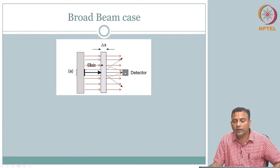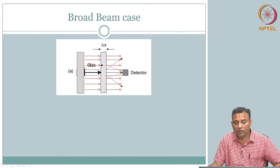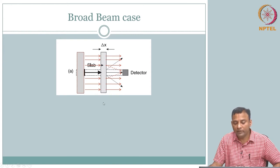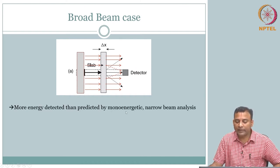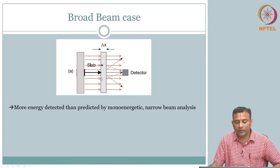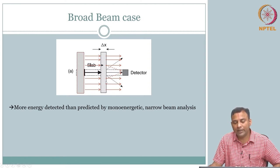Not only that — looking at the energy: even if it is a mono-energetic case, all photons sent in have the same energy. But what will be the energy at the detector? Will it be the same energy photons or a mix? More energy is detected than predicted by mono-energetic narrow beam analysis because the Compton-scattered photons bring in some energy H mu', and therefore more energy is detected than predicted.